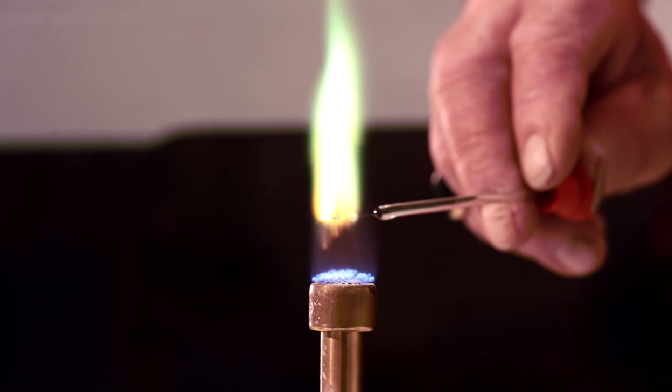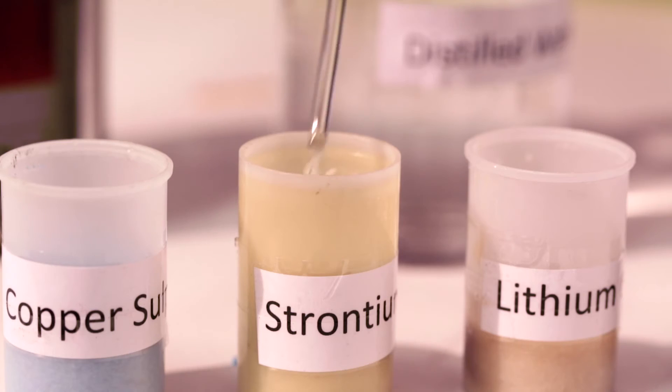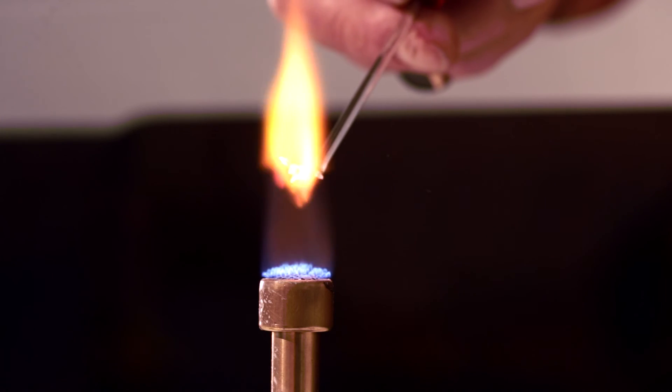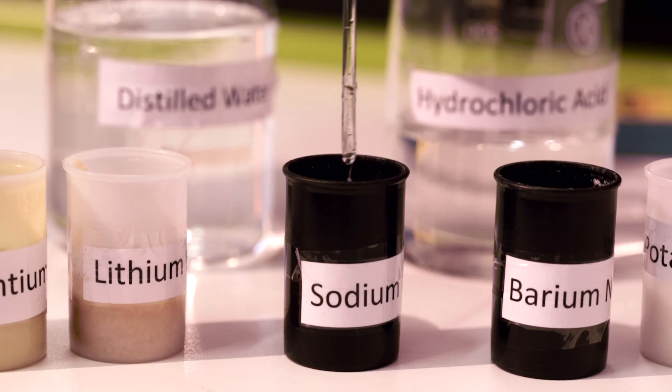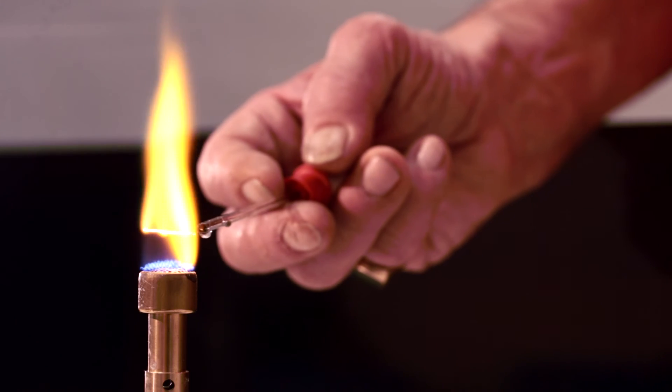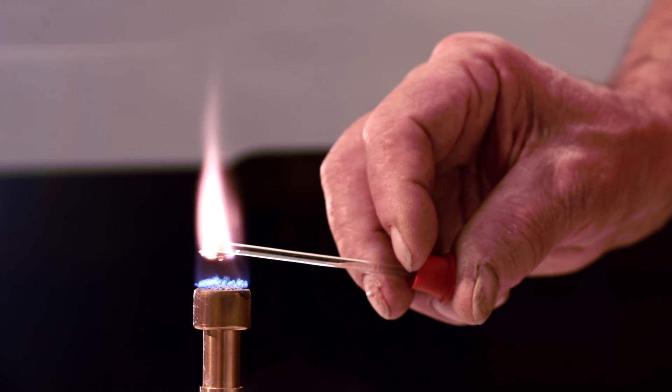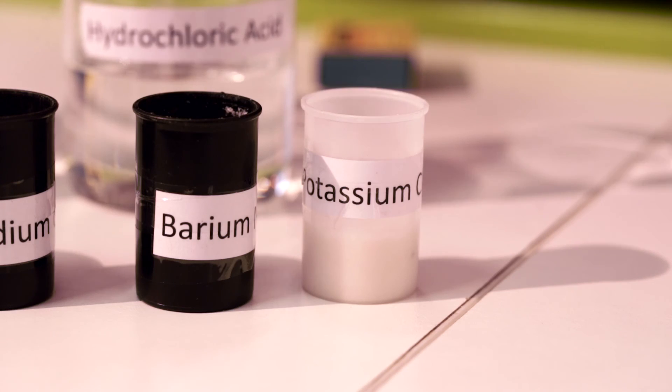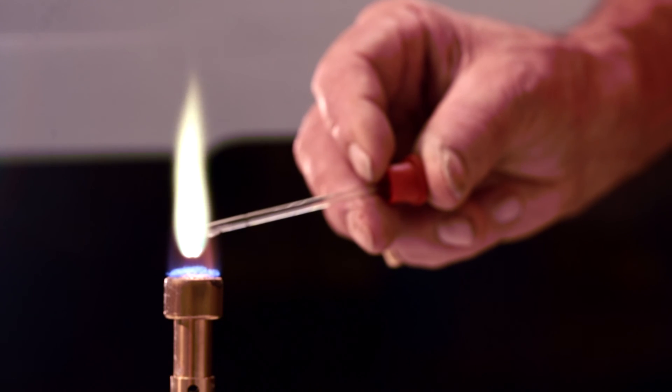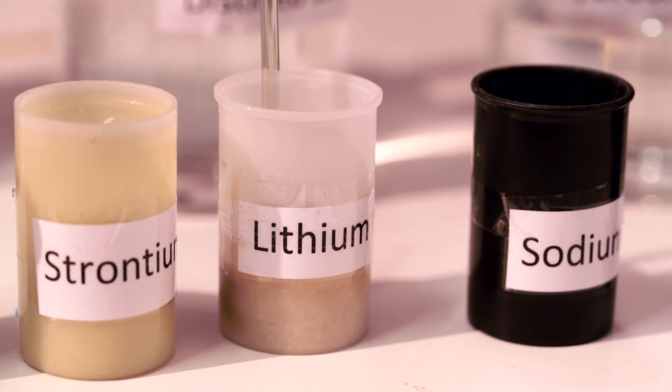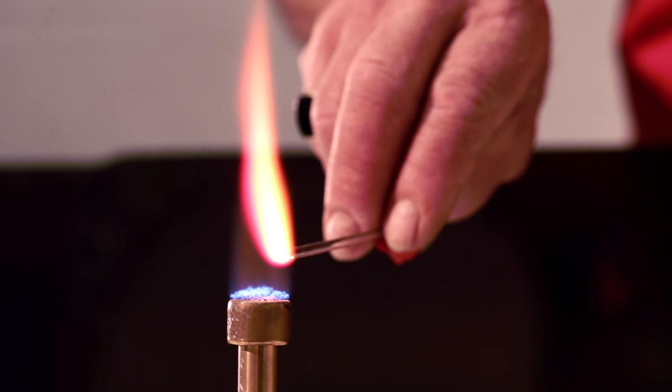Copper will give a green flame. Strontium will give a brick red flame. Sodium will give a daffodil yellow flame. Potassium will give a lilac flame. Barium will give an apple green flame. And lithium will give a red flame.